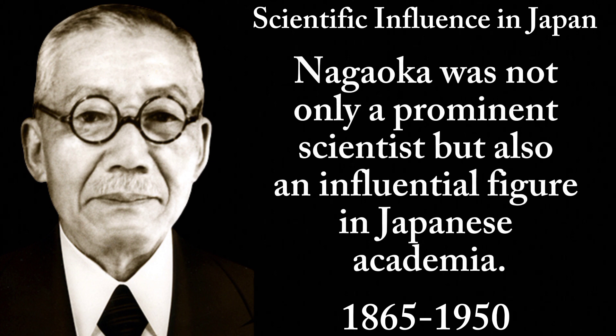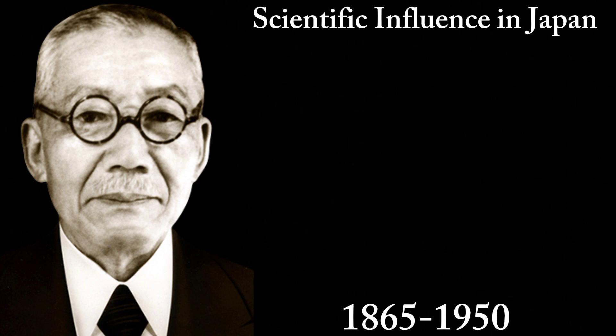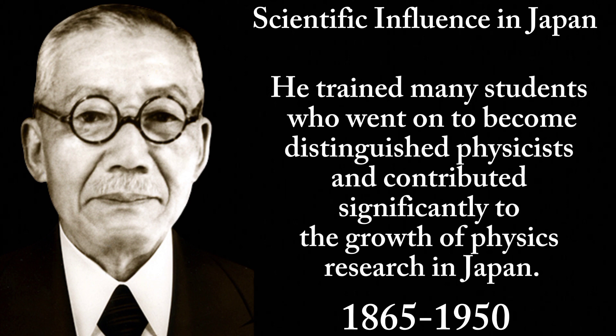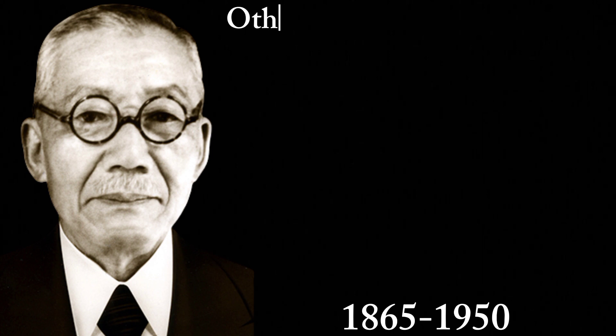Nagaoka was not only a prominent scientist but also an influential figure in Japanese academia. He trained many students who went on to become distinguished physicists and contributed significantly to the growth of physics research in Japan.